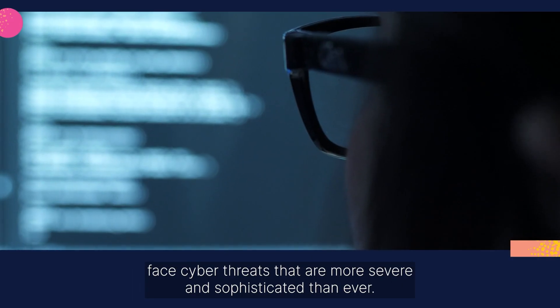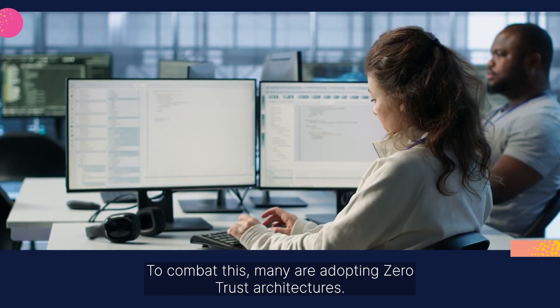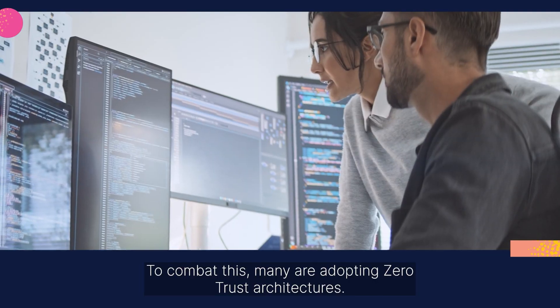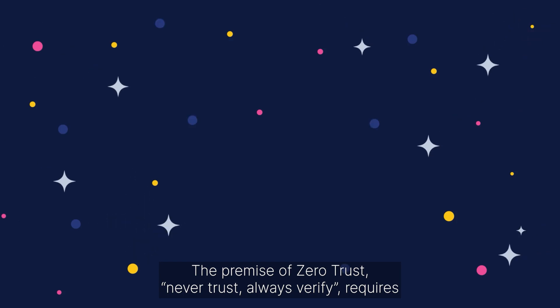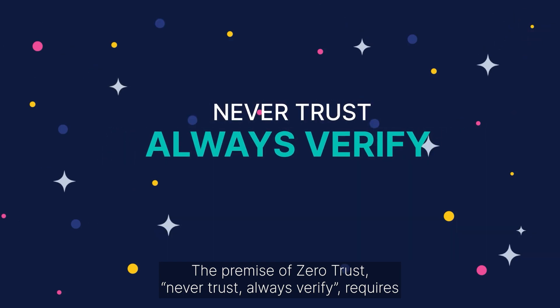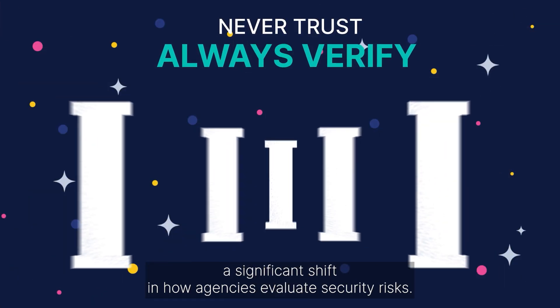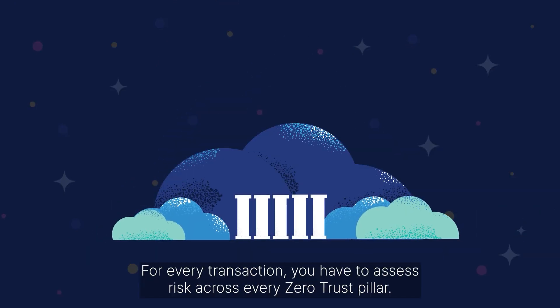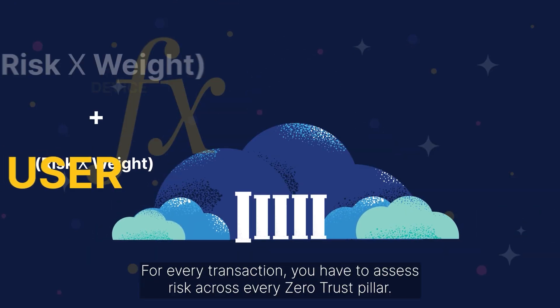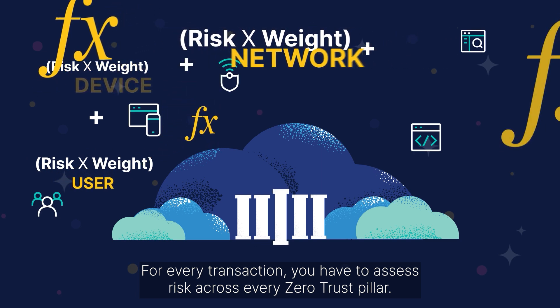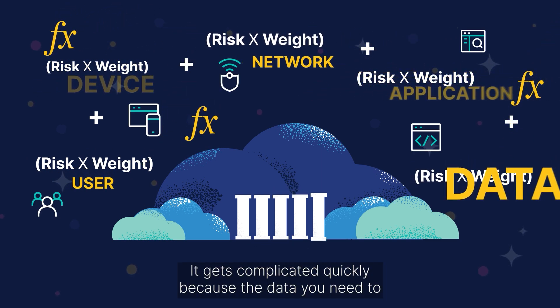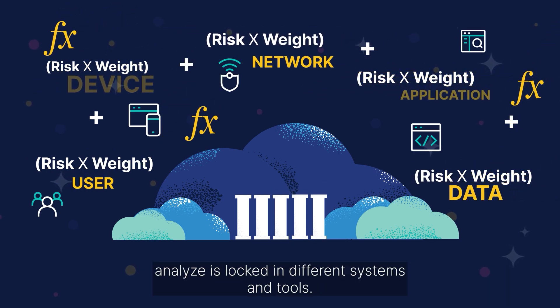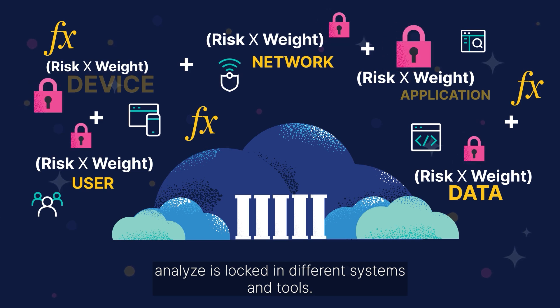Government agencies face cyber threats that are more severe and sophisticated than ever. To combat this, many are adopting zero trust architectures. The premise of zero trust — never trust, always verify — requires a significant shift in how agencies evaluate security risks. For every transaction, you have to assess risk across every zero trust pillar. That gets complicated quickly because the data you need to analyze is locked in different systems and tools.